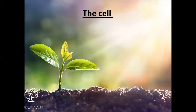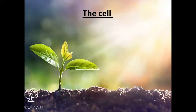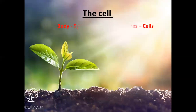In our last sessions we talked about our body and we said that our body consists of six systems. Each system consists of many organs, each organ is made of tissues, and each tissue is made of many cells. We talked about two systems: the digestive system and the respiratory system.